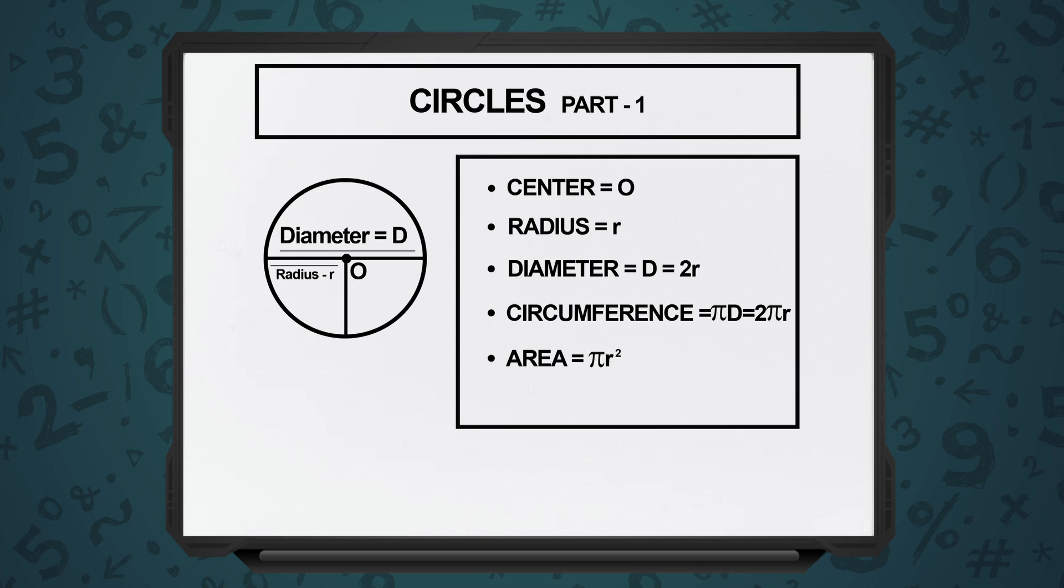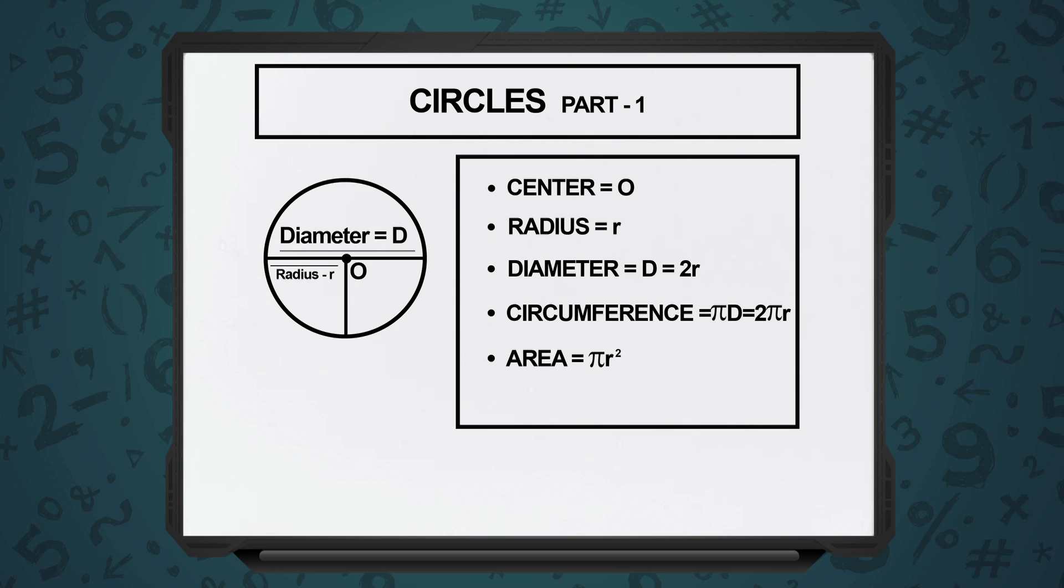The next thing is the perimeter or the circumference in the circle. That is the total length of the curved structure. The circumference of a circle is given by the formula 2πr and the area of a circle is given by the formula πr².